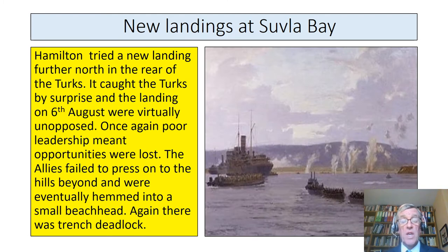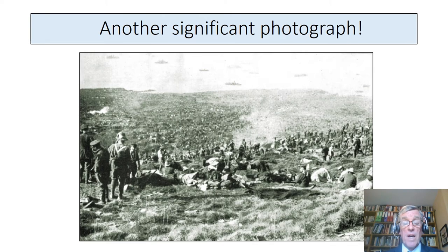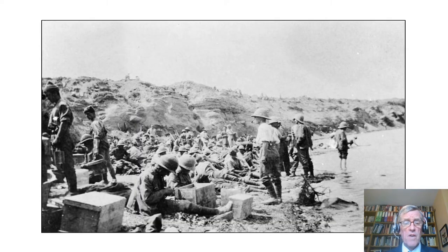Hamilton then tried a new strategy, which was to land further north behind the Turks at a place called Suvla Bay. The landings took place on the 6th of August — they surprised the Turks and were virtually unopposed, but once again very poor leadership among the British meant opportunities were lost. They failed to press onto the hills beyond, and eventually, like the Anzacs, they were hemmed into a small beachhead, and again there was trench deadlock. There's a picture of British troops landing at Suvla Bay — they're not pressing inland, they should have been pressing inland to capture the hills.